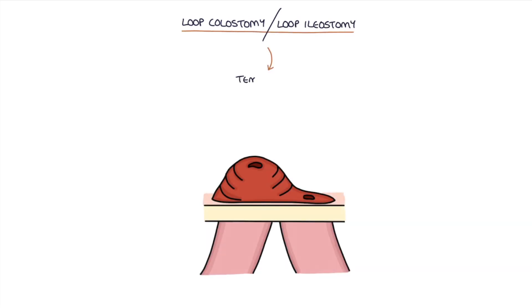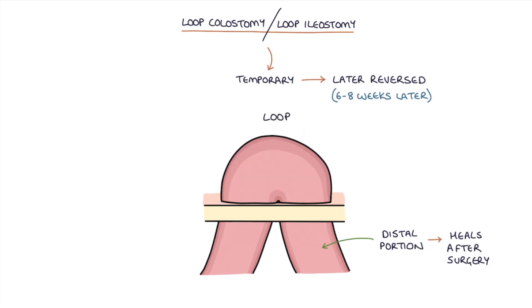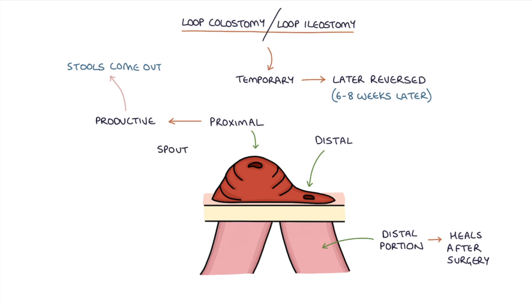Let's talk about loop colostomies and loop ileostomies. A loop colostomy is used to allow the distal portion of the bowel and the anastomosis to heal after surgery before the loop colostomy is reversed around 6–8 weeks later. The bowel is partially opened and folded so that there are two openings on the skin side by side, attached to each other in the middle. A loop of bowel is taken through the abdominal wall, the looped middle section is removed, and the two ends — the proximal and distal end — are left open. The proximal end, which is productive, meaning stools come out of it, is turned inside out to form a spout to protect the surrounding skin. The distal end is more flat, and this allows you to tell which end is proximal and which is distal when looking at a loop ileostomy.